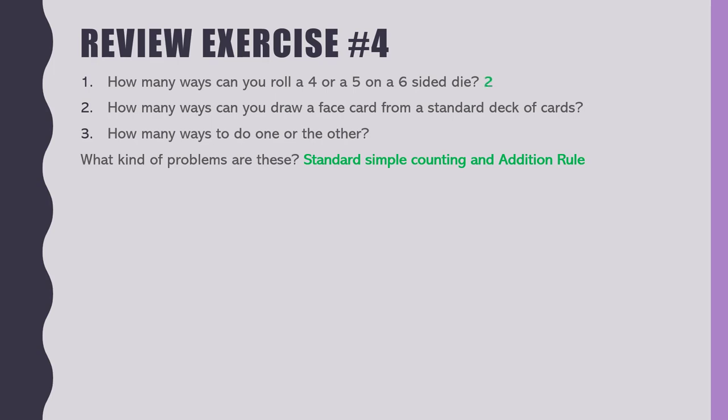How many ways to do one or the other? Roll a 4 or 5, or draw a face card? The addition rule says: if you can do task one in 2 ways or task two in 12 ways, you add them — 14 total ways. That's our addition rule. If you're confused, go back to last Monday's videos. I split it into two 30-minute videos, so you can probably watch them at 1.5x or 2x speed.